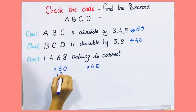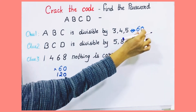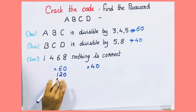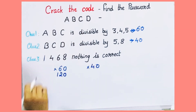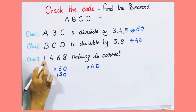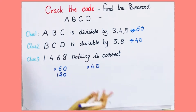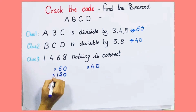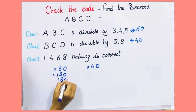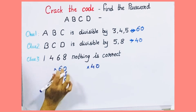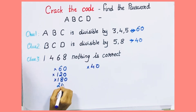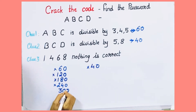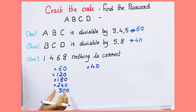Multiples of 60: the first is 120 — we can't take it because 1 appears. Next is 180 — we can't take it as 1 and 8 are there. Next multiple is 240 — we can't take it as 4 is there. Next multiple is 300 — these digits are not here, so we might take this.